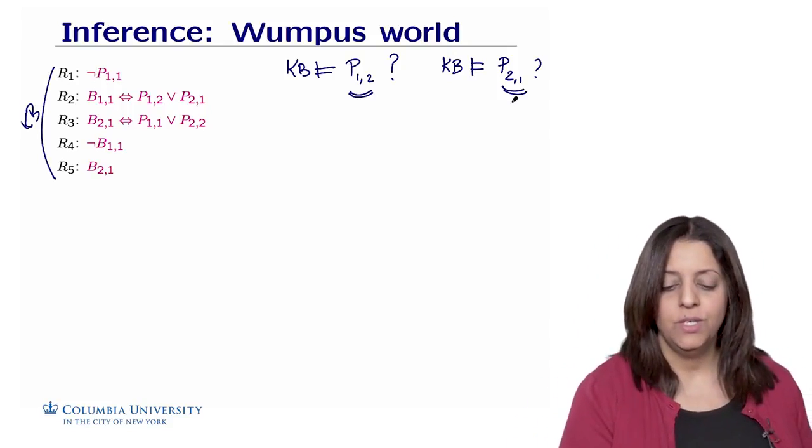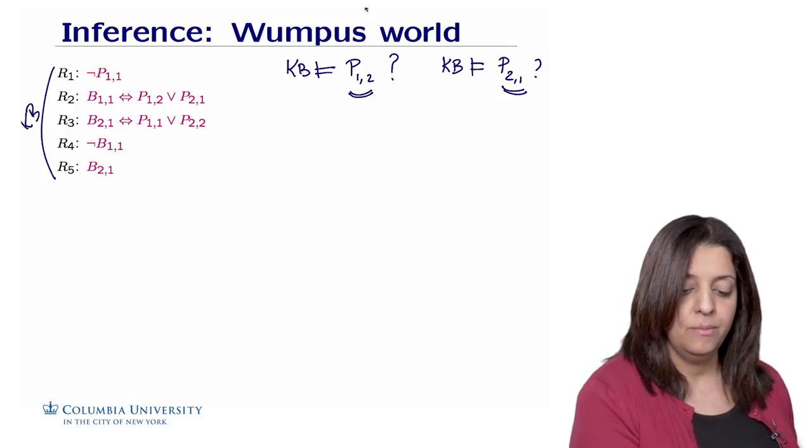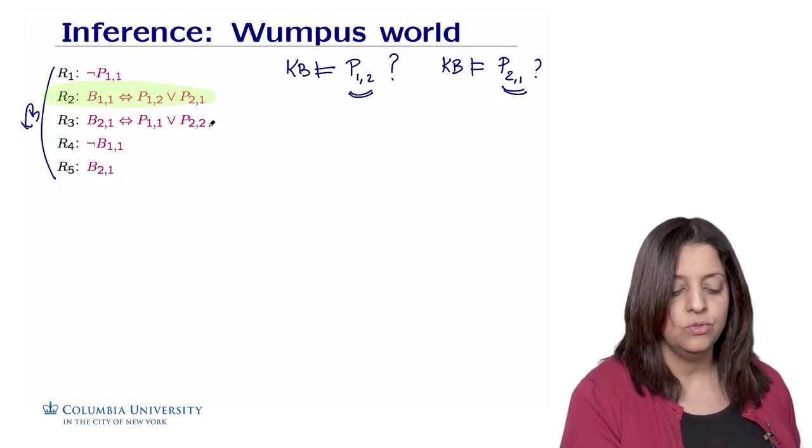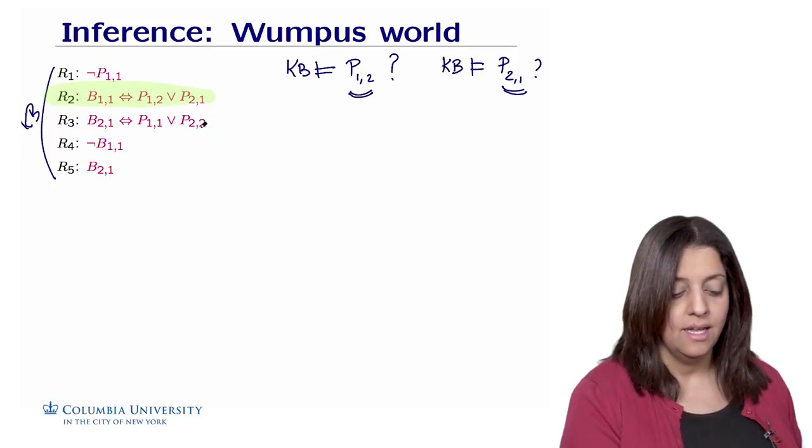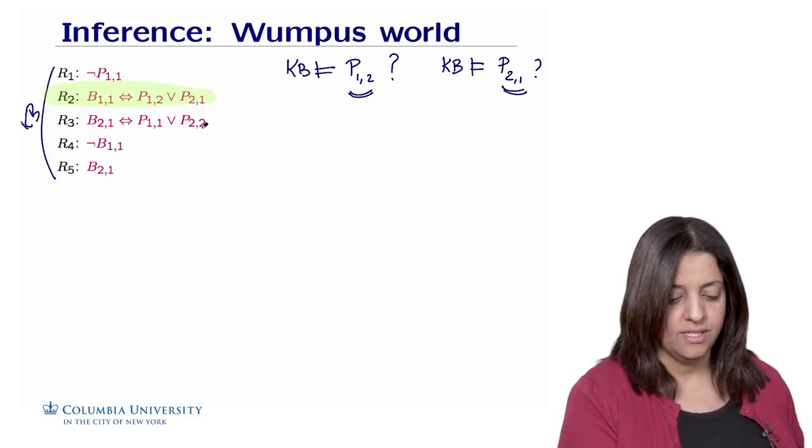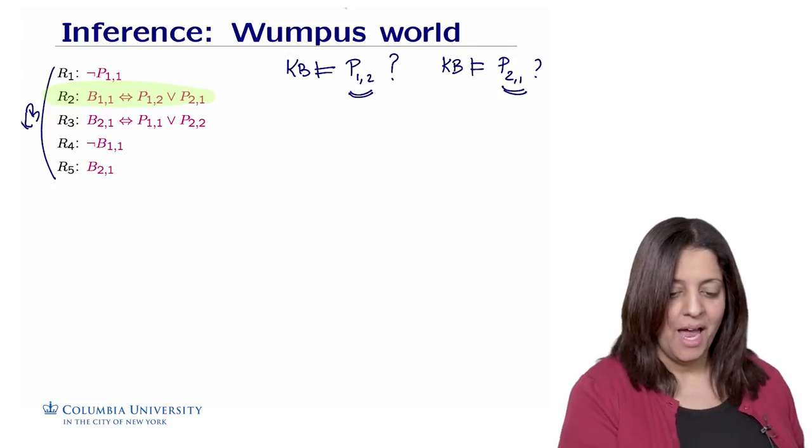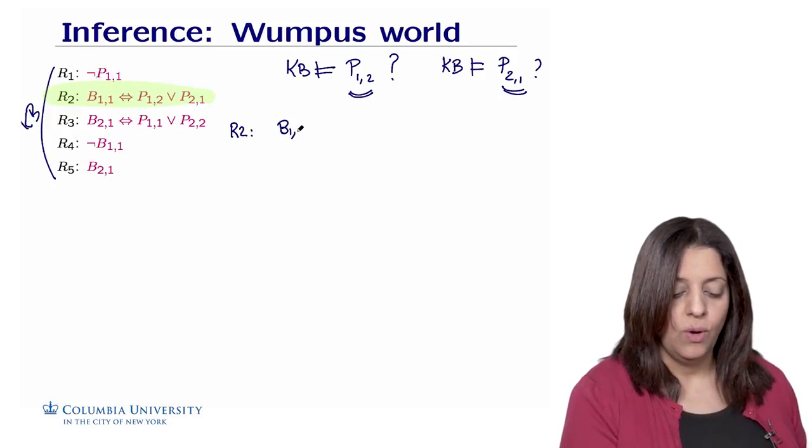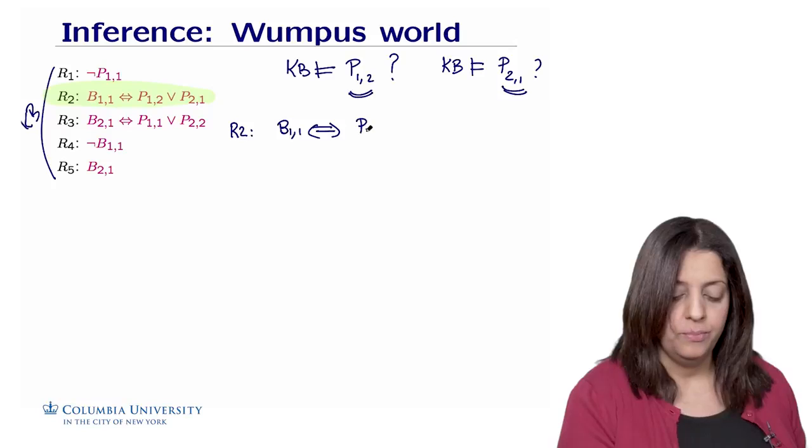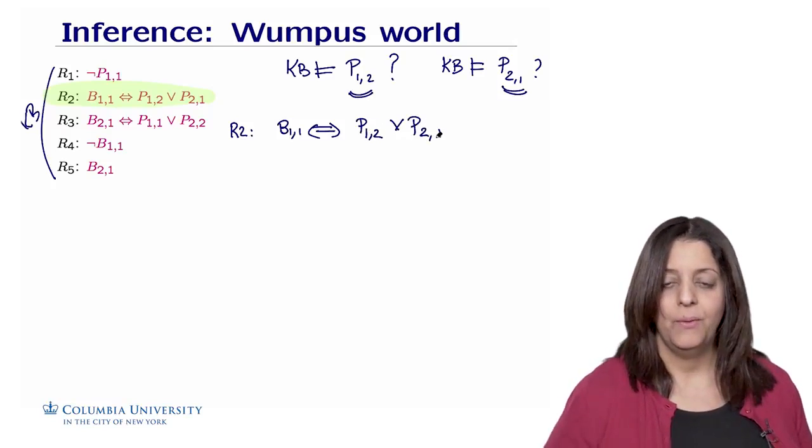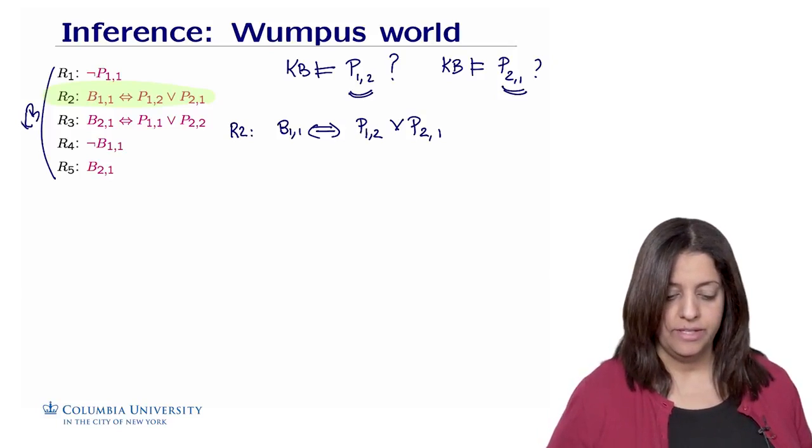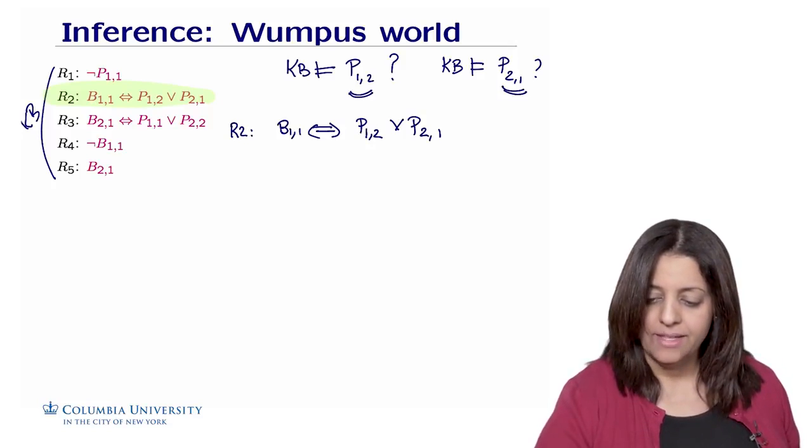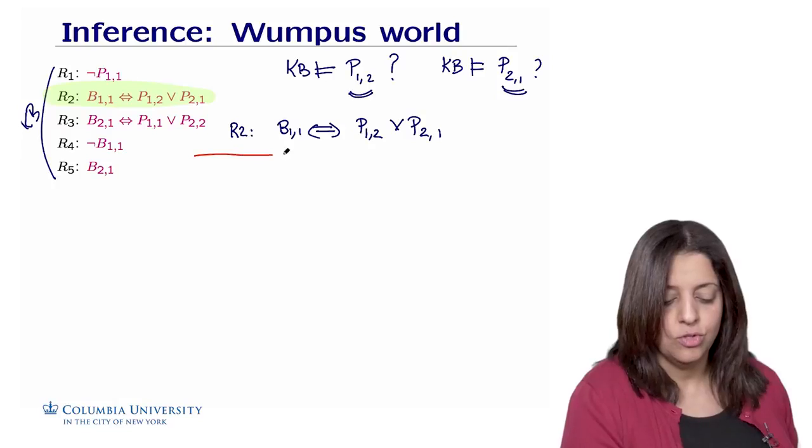First observation: p12 and p21 appear in rule number 2, this proposition here. So we can just focus on this one for now. This one does not have p12 and p21, so it is unlikely that this rule will lead to true inference to these two elements that we are trying to prove. So we are starting with rule R2. The rule R2 says that breeze in 1-1 if and only if we have a pit in 1-2 or a pit in 2-1. This is a rule that we know is true. There is a breeze only if there is a pit in the adjacent cells.